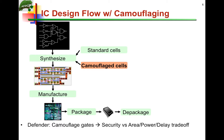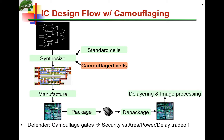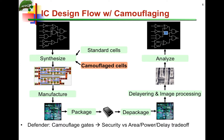From the attacker's point of view, the attacker takes the chip, de-packages it, de-layers it, does image processing, puts it under a microscope, takes individual images of the layers, and reconstructs the netlist. But this time the netlist will have ambiguities stemming from the camouflage cells. Under a microscope, the attacker cannot tell whether a camo cell is a NAND or NOR gate, because contacts could be true contacts or dummy contacts. So there is ambiguity imposed on the attacker — they do not know the functionality of the camouflage cells, while all other standard cells are easily reverse engineered.